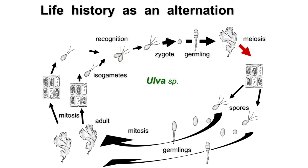Let's go over this life cycle again. We start with a zygote, which is always diploid — 2n. The diploid zygote through mitosis starts growing into the adult organism. At the stage of four cells we call it a germling, and the cell would produce a holdfast, which is kind of a root in seaweeds. And here we see a diploid adult organism — 2n.